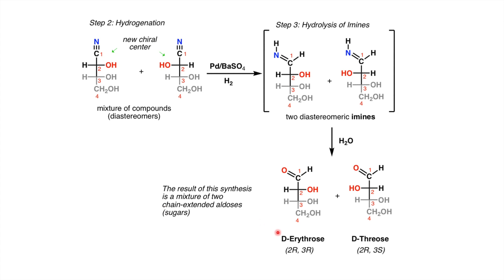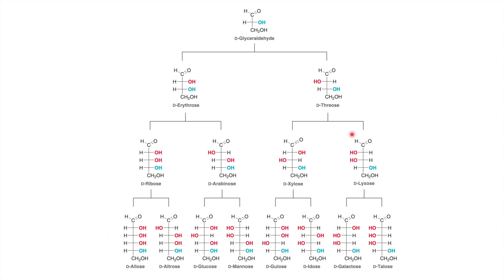When you treat the diastereomeric imines with water, you get D-erythrose and D-threose from D-glyceraldehyde. Using this approach you can make all carbohydrates: from D-glyceraldehyde you get D-erythrose and D-threose; performing Kiliani-Fischer on D-erythrose gives D-ribose and D-arabinose; further reactions yield D-allose, D-altrose, D-glucose, and D-mannose. From D-threose you get D-xylose and D-lyxose, and further Kiliani-Fischer synthesis on these gives D-gulose, D-idose, D-galactose, and D-talose. This is the way to extend chains from aldotriose to tetrose to pentose to aldohexose.